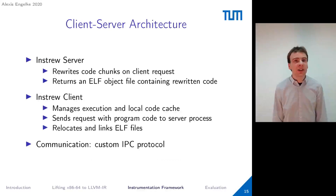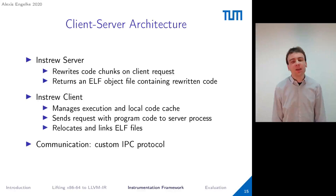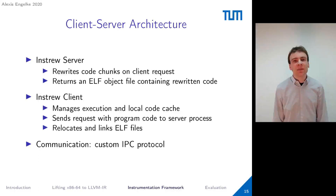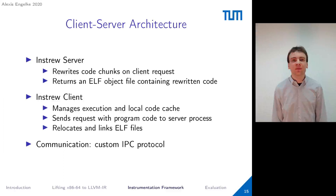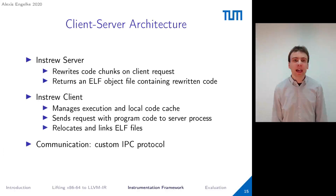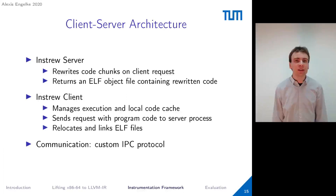The client-server architecture works as follows. The INSTRU server is passive and only rewrites code chunks on an explicit client request. Once it receives a rewriting request, it performs rewriting and instrumentation and returns an ELF object file containing the rewritten code. The INSTRU client manages execution and the local code cache, and sends requests together with program code to the server for rewriting. Once it receives back an ELF file, it applies relocations and resolves missing symbols, making the client essentially a very simple runtime ELF object file linker. Communication is realized using a custom binary inter-process communication protocol.